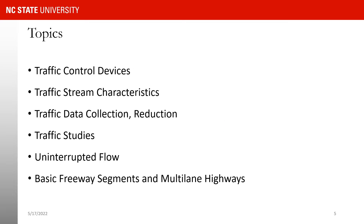Let's talk about the topics we will be covering. After this class, we will start with traffic control devices — we'll get to know different signs, different markings, and signals. Then we talk about traffic stream characteristics, such as flow, density, speed, and so on.